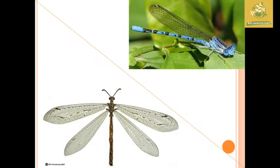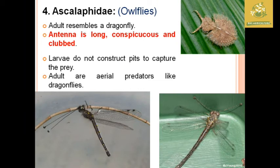Ascalaphidae comprises the owl flies. The adults resemble dragonflies in nature and the antennae are long, conspicuous, and clubbed. Unlike ant lions, the larvae do not construct pits to capture prey — instead they capture prey by ambushing. The adults are aerial predators, similar to dragonflies.